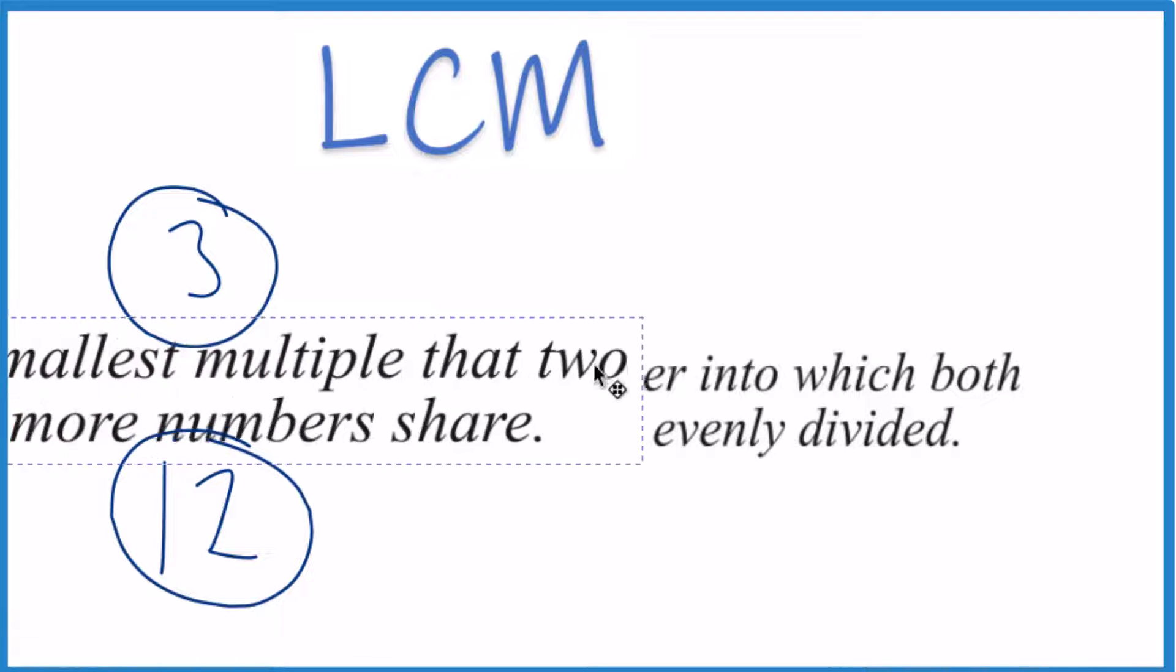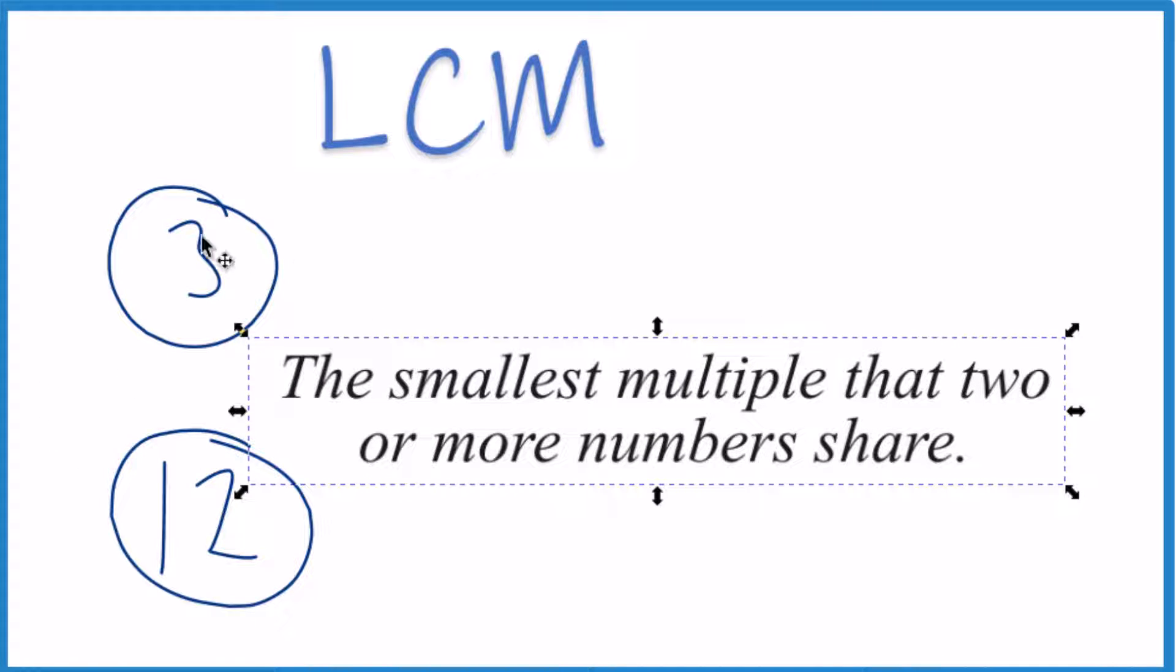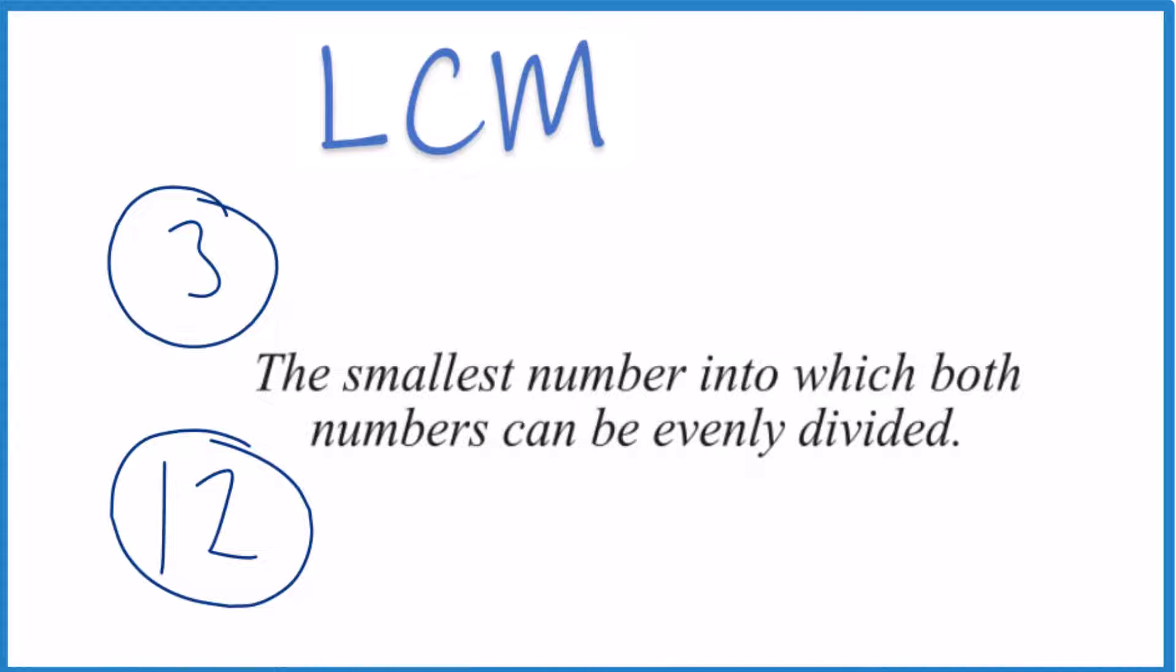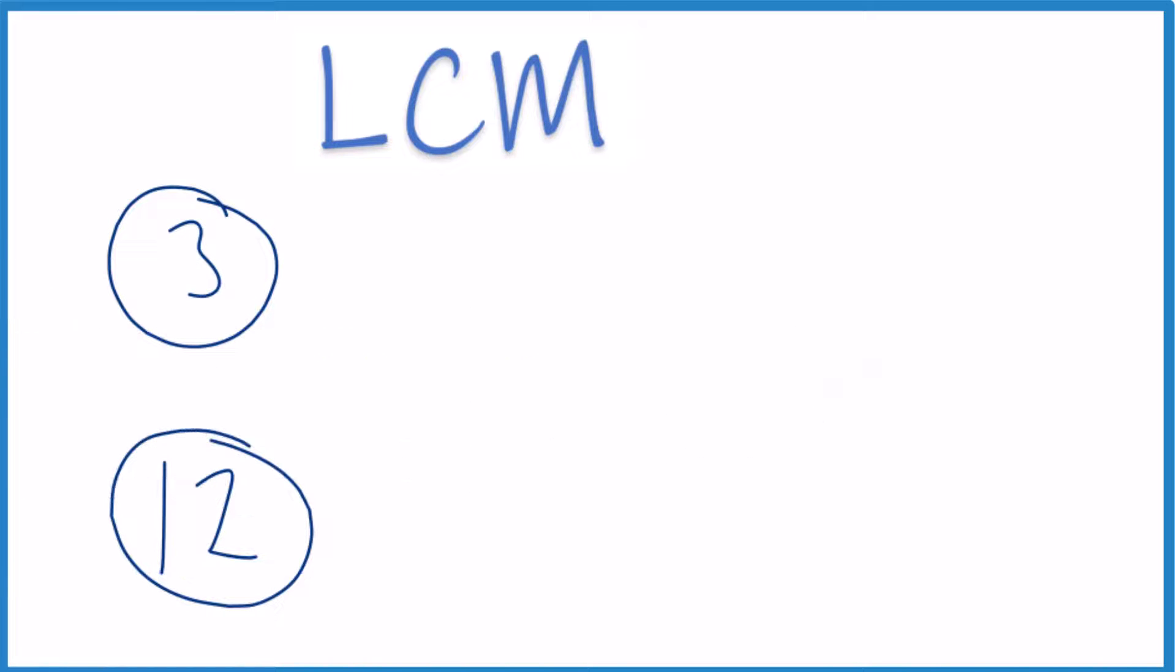You could also think of it as the smallest multiple that these two numbers share, 3 and 12. So either way, that's what we're trying to find, the least common multiple.